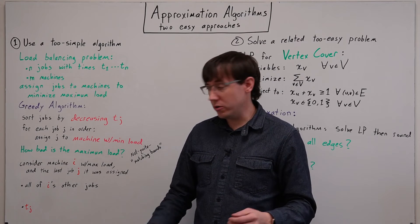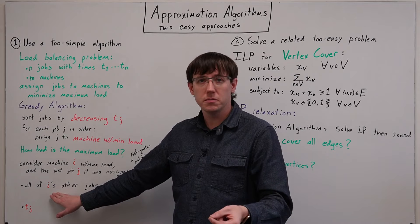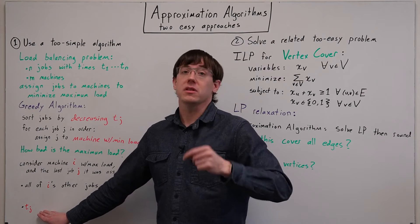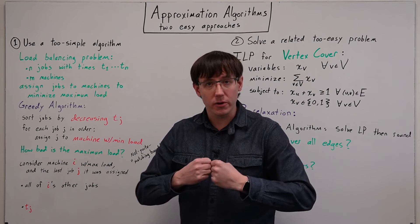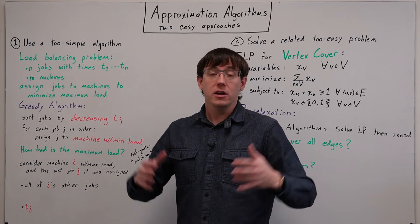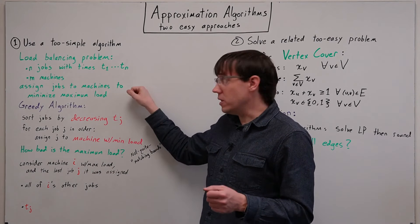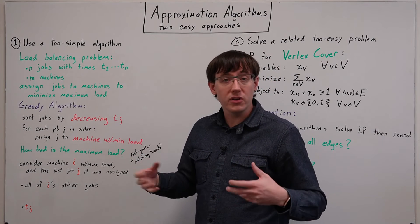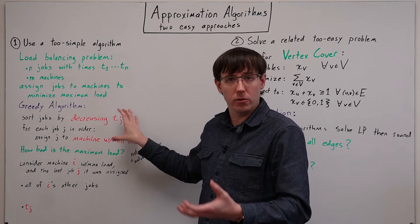And if we can upper bound the total time of all those previous jobs, and upper bound the total time of this last job, then putting those two bounds together can give us an upper bound on the total load of this machine. And since we're thinking about the worst-case machine, this will give us an upper bound on the imbalance from our greedy algorithm.